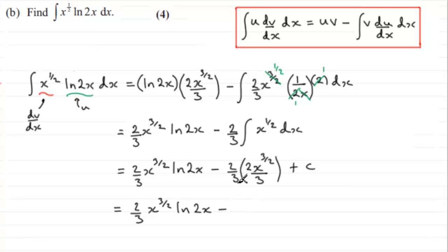Minus four ninths x to the power three over two, and then plus that constant of integration. So hope that's giving you an idea then on that question.